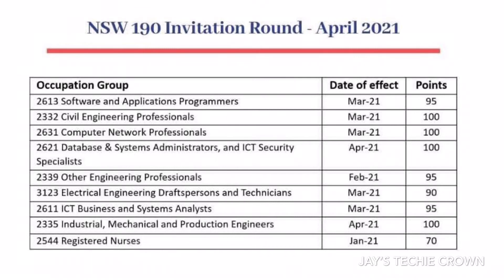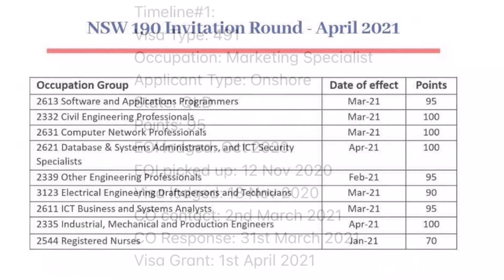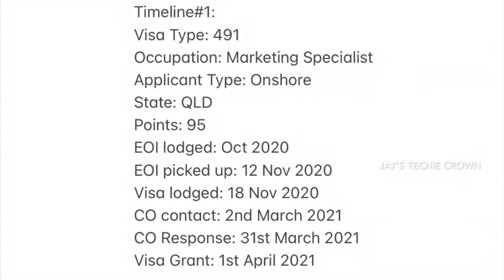Let's move on to the recent timelines of people who have received the grants. The first timeline is for visa type 491, occupation marketing specialist, onshore applicant, state Queensland, with 95 points. The EOI was lodged in October 2020, picked up on 12th November, and the visa was applied on 18th November — within six days. There was a CO contact on 2nd March 2021 due to missing documents.